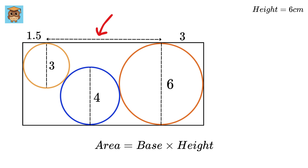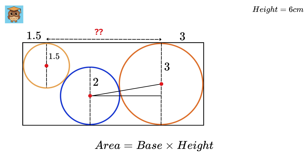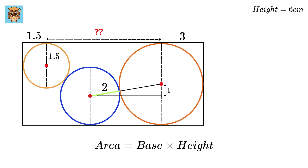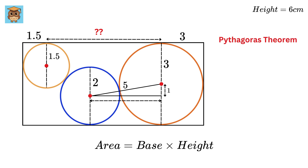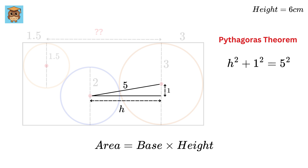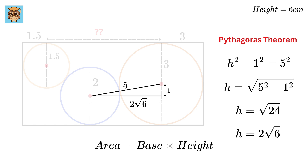Now let us calculate the length of the middle piece. First, let us draw the centers of these circles. We connect the centers of the bigger and middle circles and form a right-angle triangle. This length is the radius of the middle circle, which is 2, and this length is the radius of the bigger circle, which is 3, so the vertical distance will be 1. The two legs are 2 and 3, so the hypotenuse will be 5. Using Pythagoras theorem, with horizontal distance h: h² + 1² = 5², giving h = √24 = 2√6.